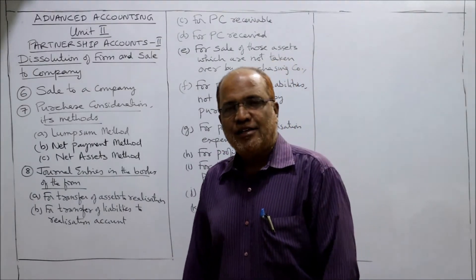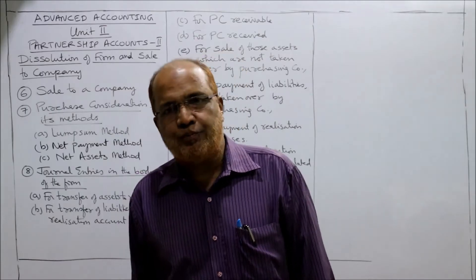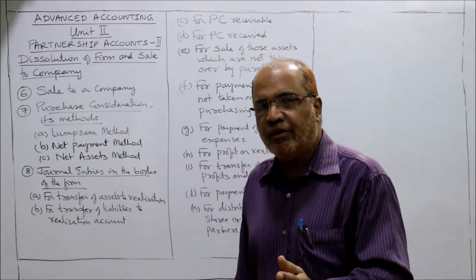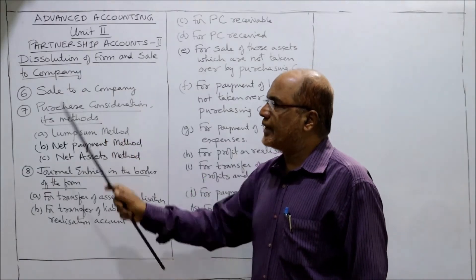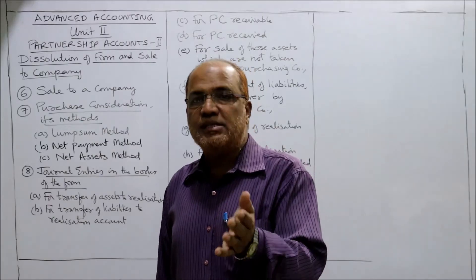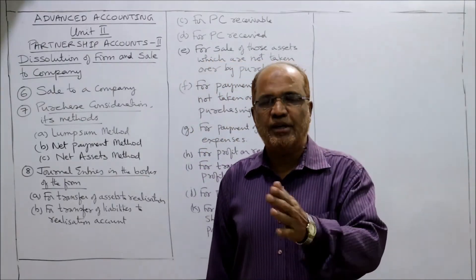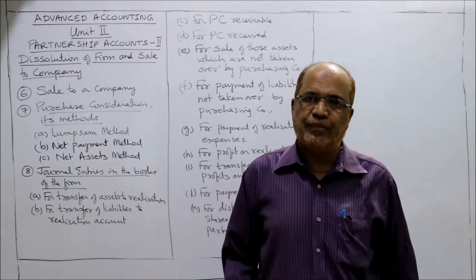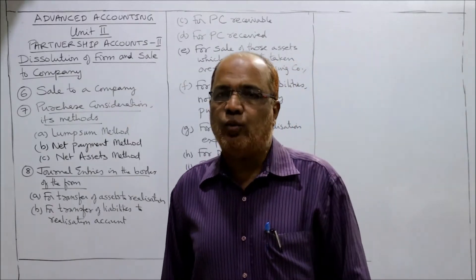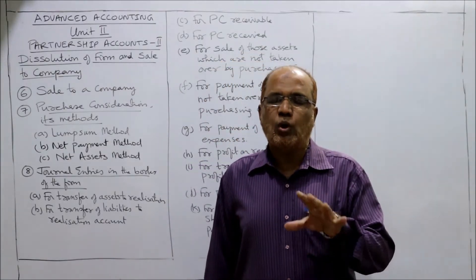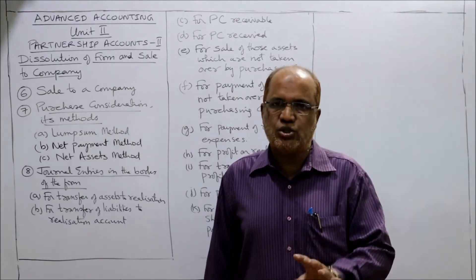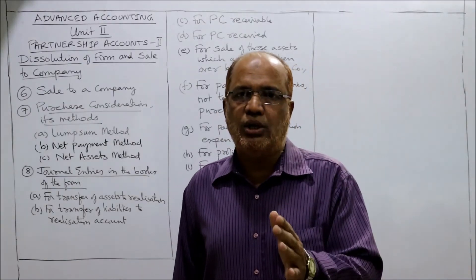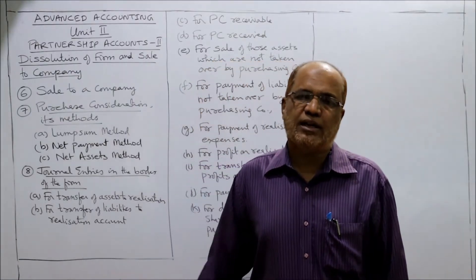Hello students, welcome back. We have completed half of unit number two, that is dissolution of firm. We have discussed what entries are to be passed on dissolution of a firm. Now we are coming to the second and last part of unit number two, that is sale to a company. The procedure of closing the accounts of the dissolved firm will be the same as dissolution of firm.